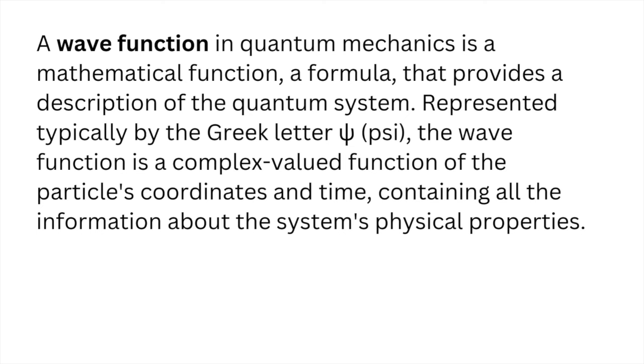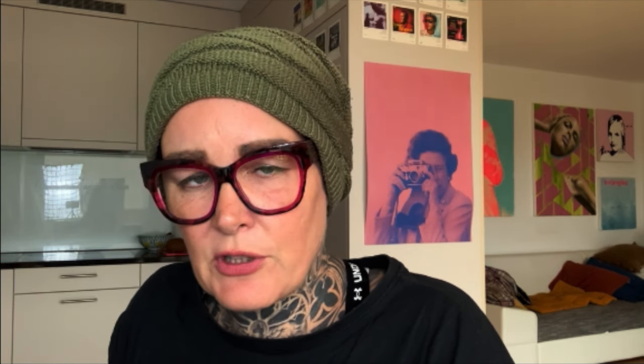Since there is always talk about the wave function, let's look at the definition so that we understand what we're talking about. A wave function in quantum mechanics is a mathematical function — a formula that provides a description of the quantum system. Represented typically by the Greek letter psi, the wave function is a complex-valued function of the particle's coordinates and time, containing all the information about the system's physical properties. I'm just going to show you one example so you have a general idea of what this would look like if we were to visualize it.